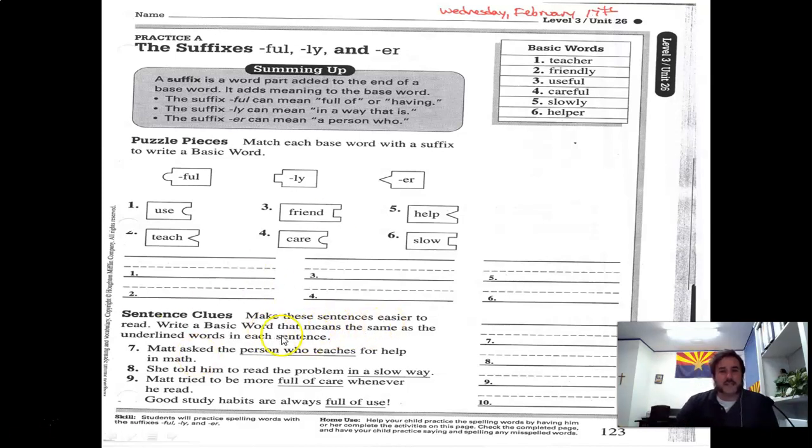Now here again, you got sentences. You have this underlying phrase here. And you got to boot that out and put the correct spelling word that makes sense. Matt asked the person who teaches for help in math. Perfectly fine sentence, but they want you to use a spelling word. And what do you think it would be? A person who teaches would be Matt asked the teacher for help in math. Boom. There you go. So that's number seven. You'd put teacher. And that's your assignment, guys.